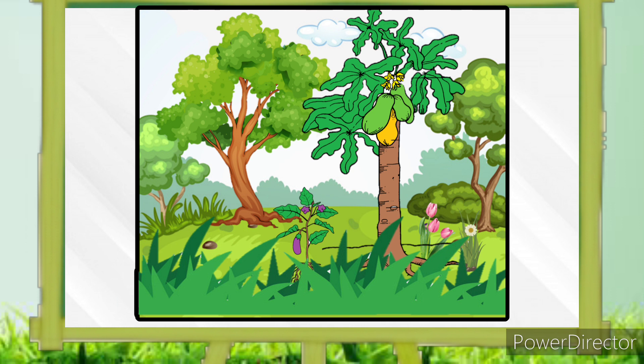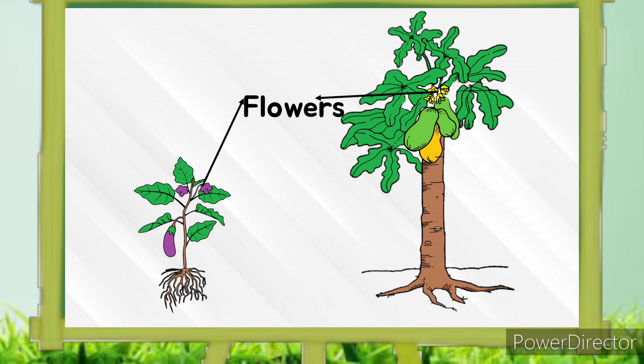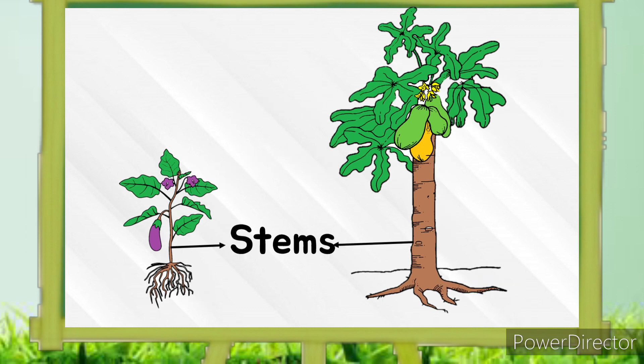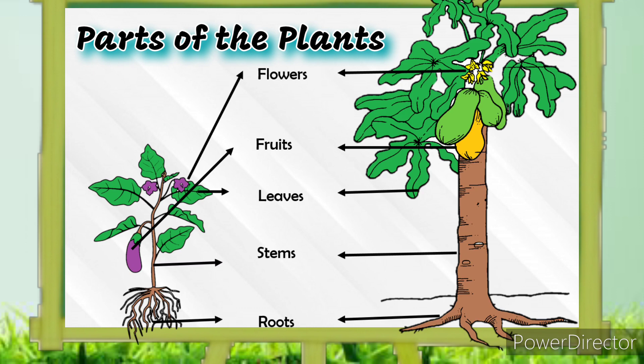Can you please tell me what does the plants have? And these are called the parts of the plants. Again, the parts of the plants are roots, stems, leaves, flowers, and fruits.